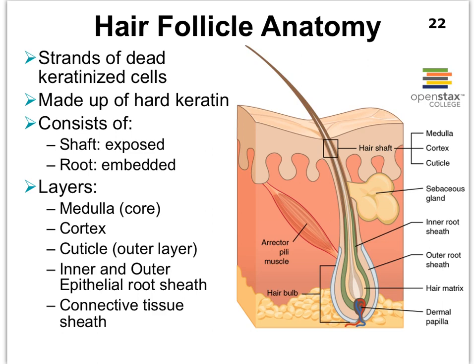Let's start with hair follicle anatomy. If we take a look at our skin as shown here, with the epidermis, the dermis, and then the subcutaneous layer or the hypodermis, we see that hair follicles are pretty deeply embedded in the dermis, even all the way into the hypodermis. This rather swollen part we'll refer to as the hair bulb. Most of what is embedded into the skin we'll refer to as the root of our hair follicle.